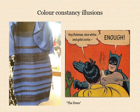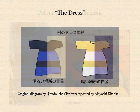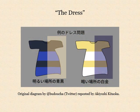New colour constancy illusions continue to appear by accident or design. In the case of The Dress, the camera's exposure and white balance settings accidentally produced an image that our object colour constancy processing can automatically parse in two very different ways — in which the blueness and the darkness of the dress image is attributed in one case to the dress itself and in the other to the illumination.